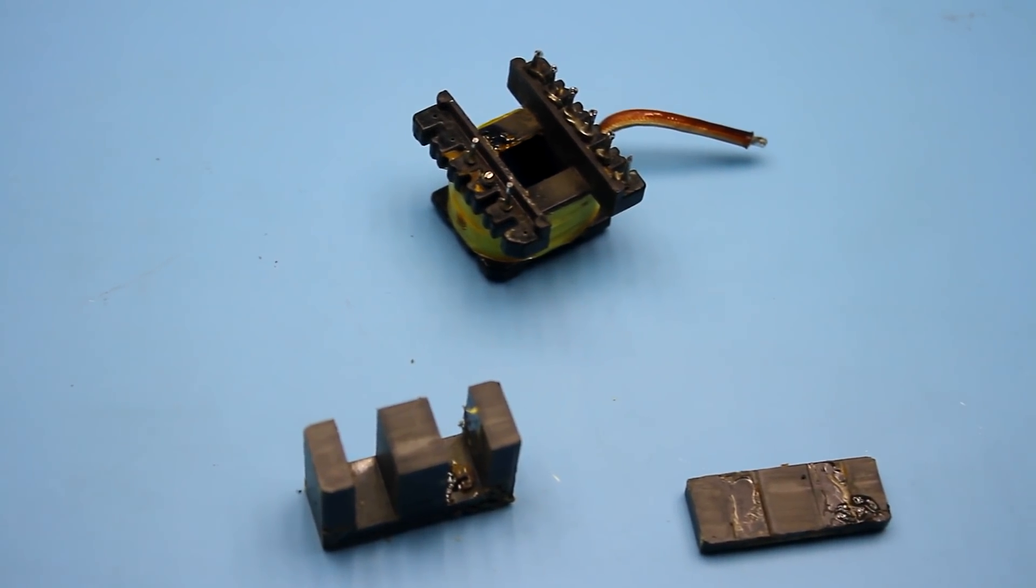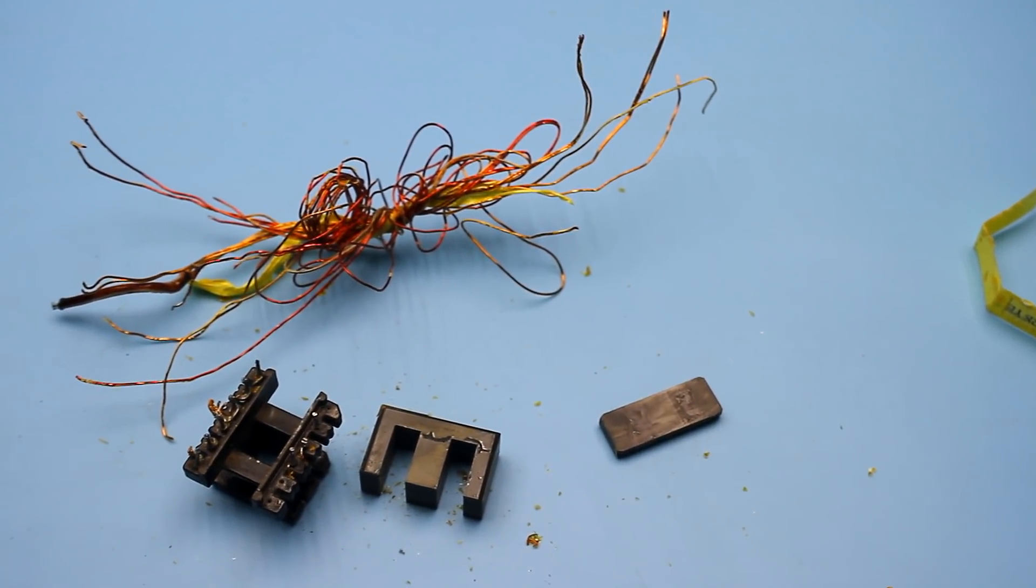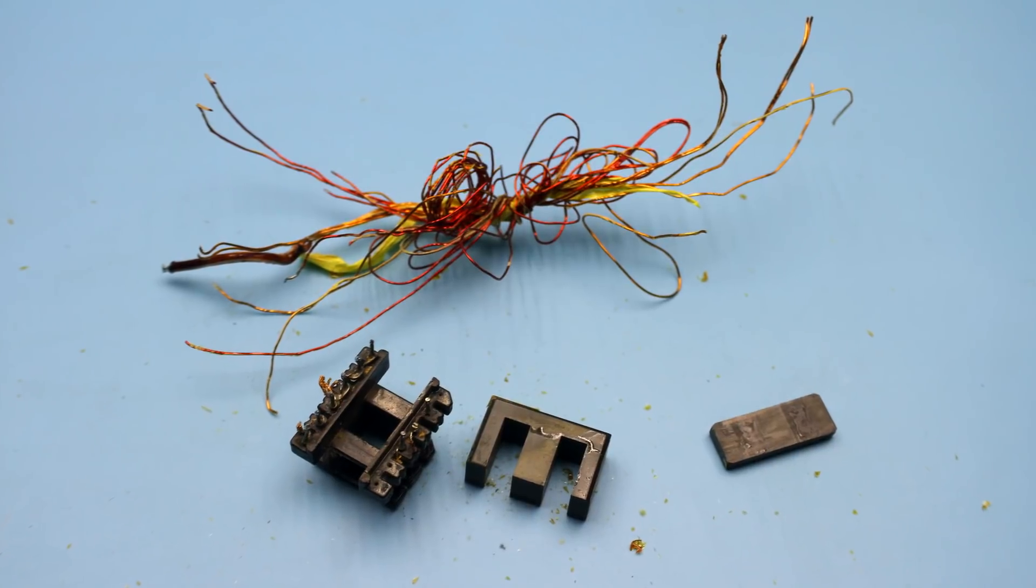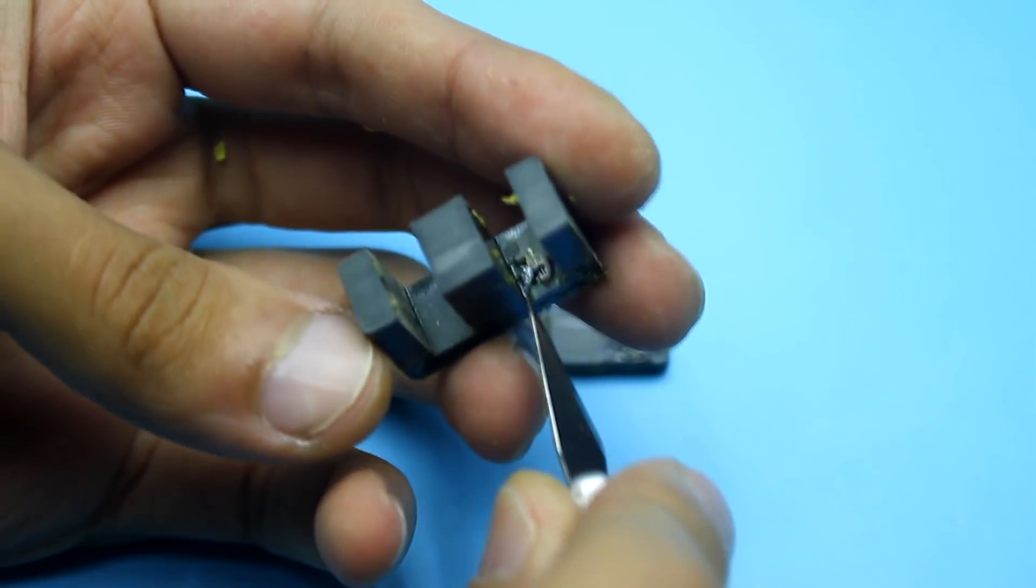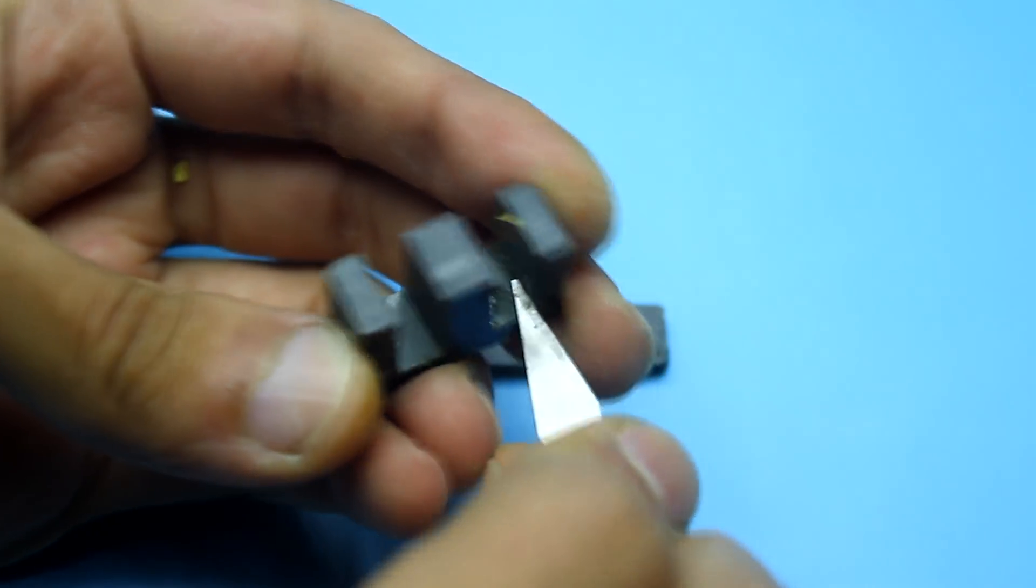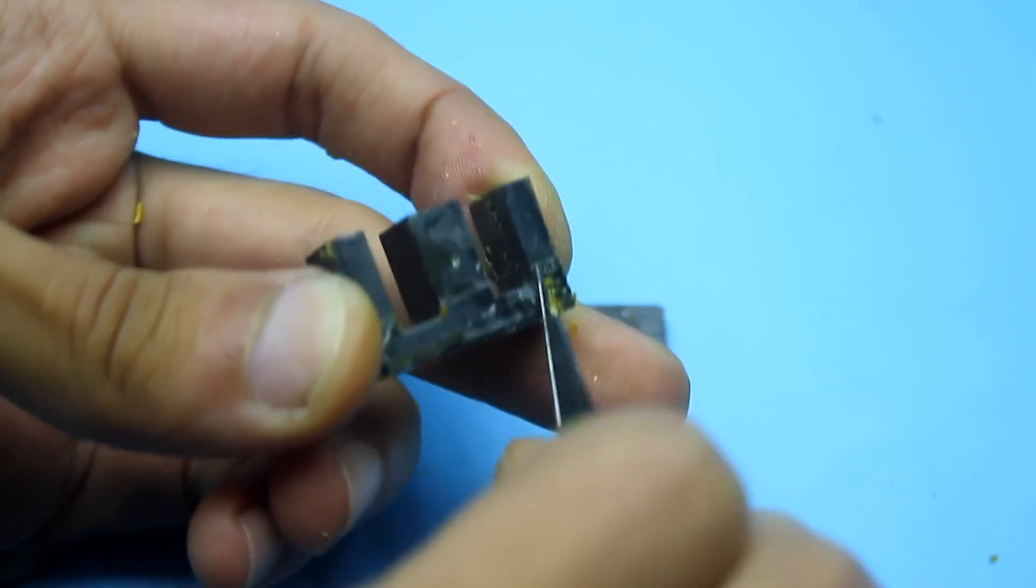The transformer is heated to loosen the glue between the halves of the core. Next, carefully remove the halves of the core and then begin dismantling the old windings. Here, any methods are good. We will not need the wire from old windings anymore. Then, the frame and the core halves must be cleaned of the glue.